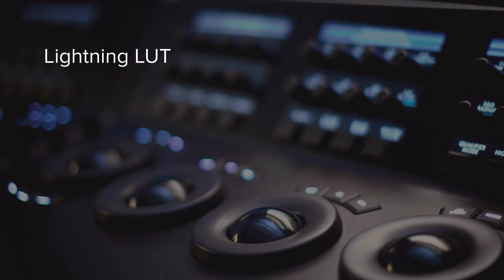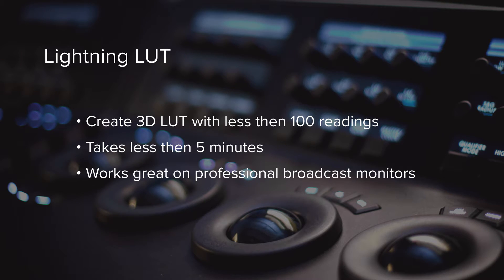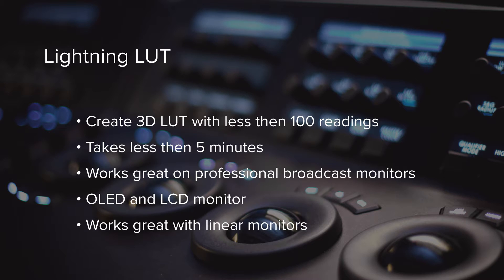There is also new technology called Lightning LUT, which allows creation of a whole 3D LUT from less than 100 readings. This takes less than 5 minutes and works great on professional broadcast monitors, whether OLED or LCD. The Lightning LUT is ideal for a good, fairly linear display — you can create it very fast, add it to the display software or a LUT box, and then run a color checker test to confirm it's been applied properly.